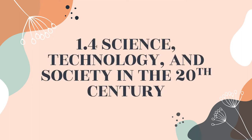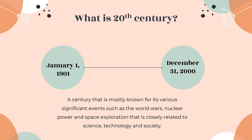Moving on to the last subtopic under this chapter is 1.4, Science, Technology and Society in the 20th Century. The 20th century is the period of time that started from January 1st of 1901 until December 31st of 2000. It is a century mostly known for its various events such as the world wars, nuclear power, and space exploration, which are closely related to our title: Science, Technology and Society.